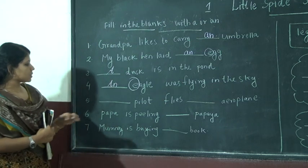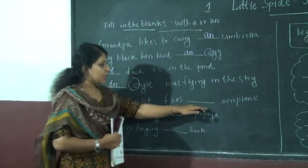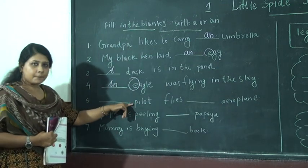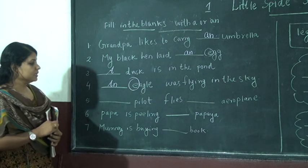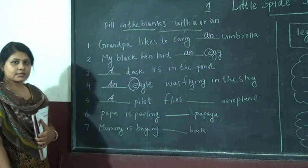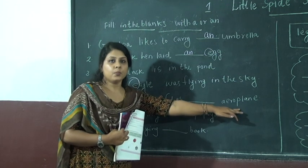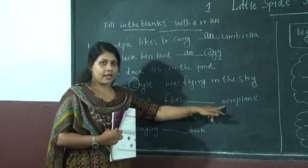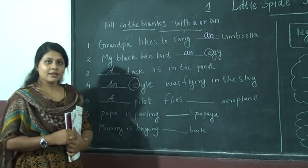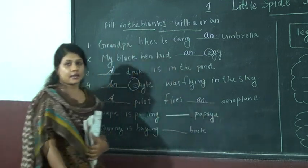Next one: Dash pilot flies dash aeroplane. For pilot, the first letter is P — not a vowel, so A is the right answer. For aeroplane, the first letter is A — so AN is the right answer. AN aeroplane.